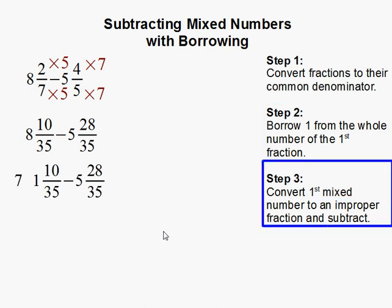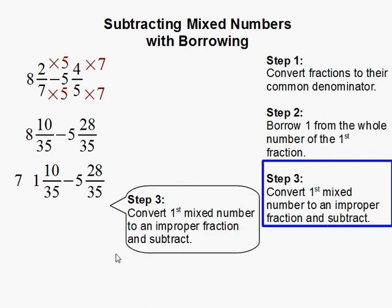Step 3: Convert first mixed number to an improper fraction and subtract. So our first mixed number, 1 and 10 over 35, we're going to convert that to an improper fraction.